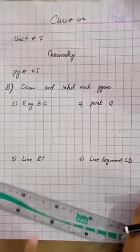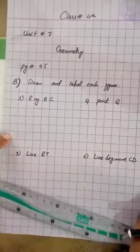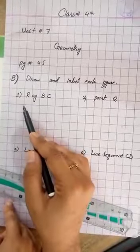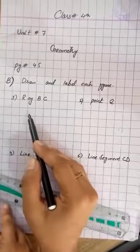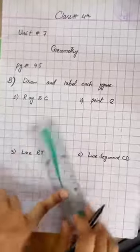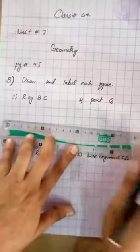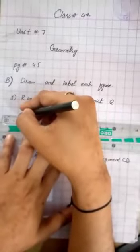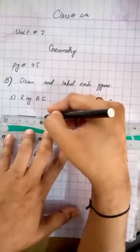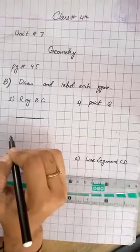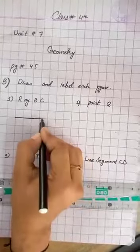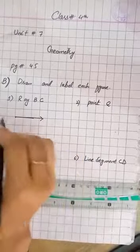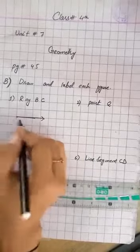Students, I have ready this page. You can see here question B. First, part number 1 is Ray BC. How do you draw this? You can create a line of 5 to 6 boxes. You can see this side is the starting point. This side is the ending point. What is this? Ray BC.